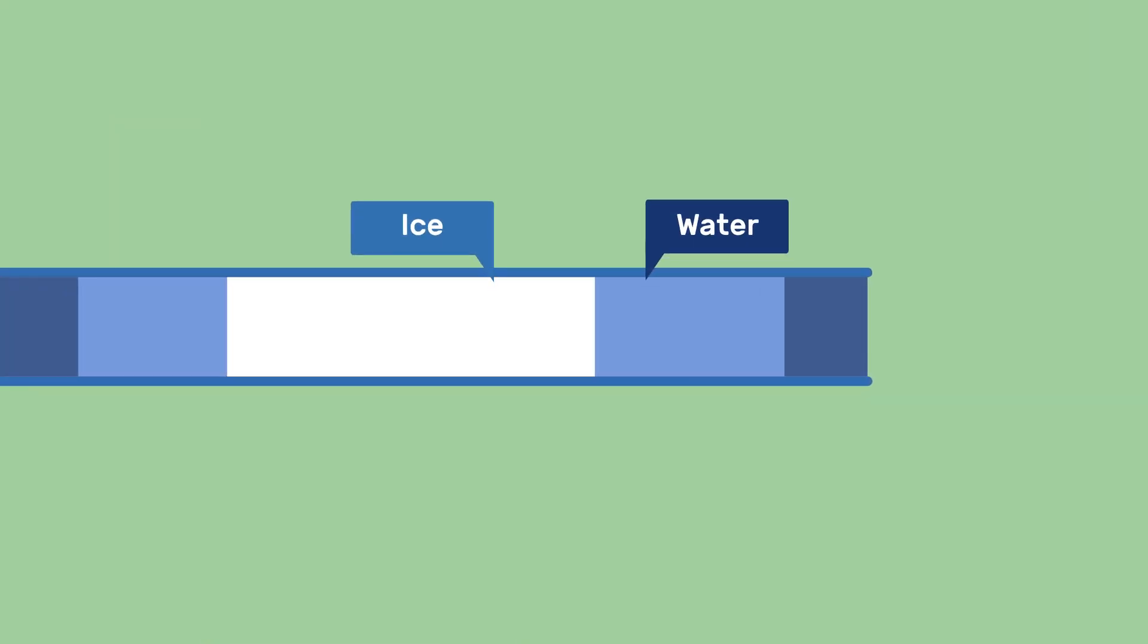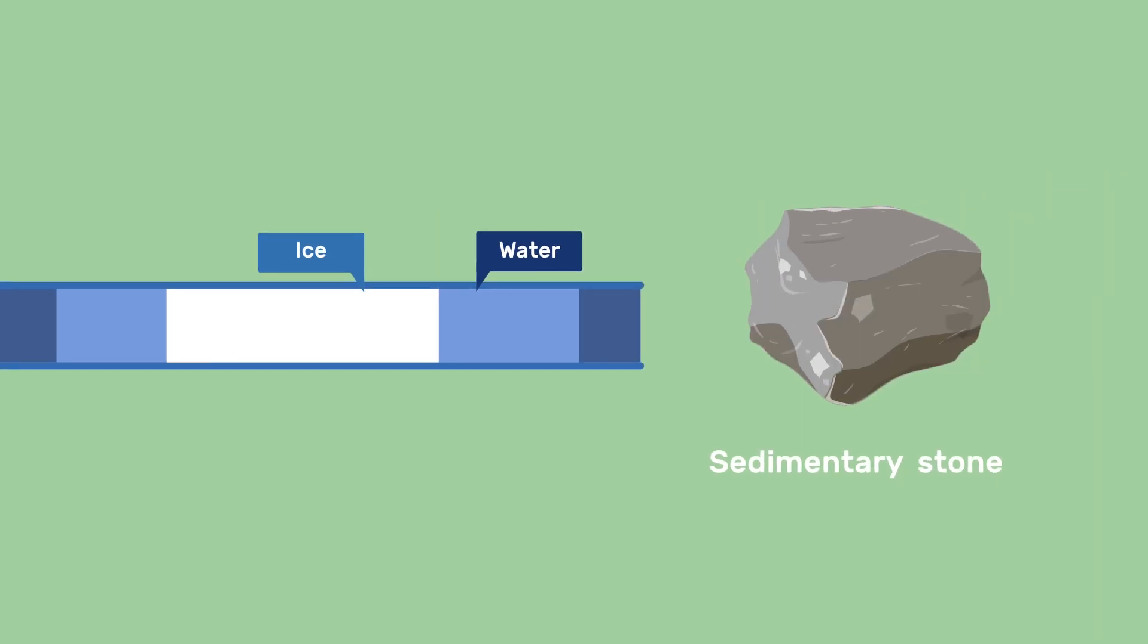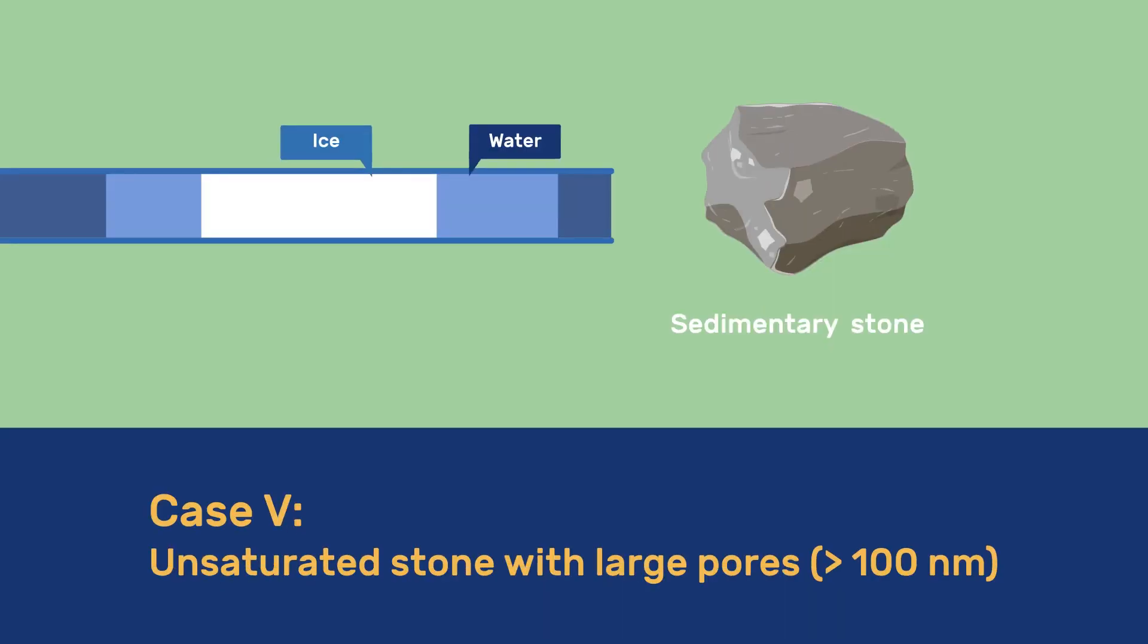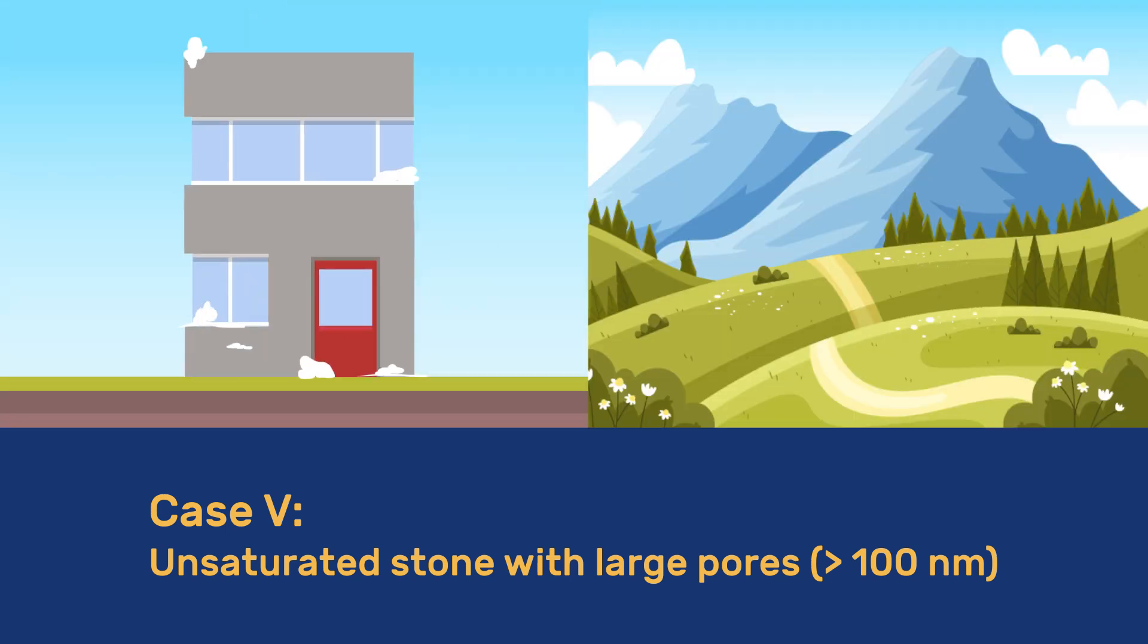In this video, we see how materials with larger pores, such as sedimentary stones, may be damaged if a temperature gradient is sustained. This represents our case 5 of freezing damage. It not only affects buildings, but also sculpts mountains.